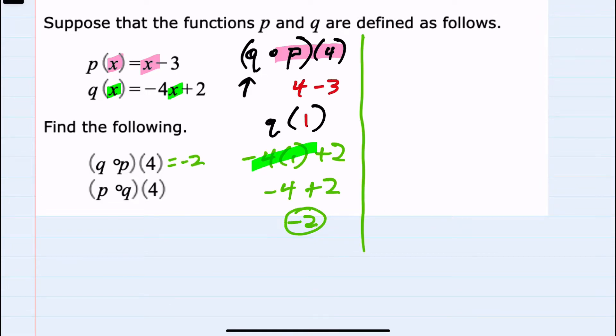We'll now turn to the second, which is p of q of 4. This time, the q is closest to the 4, so we will start by plugging 4 into the q function to get negative 4 times replacing x with 4 plus 2, or negative 16 plus 2.